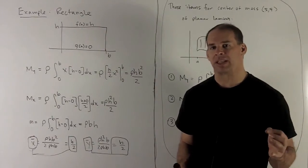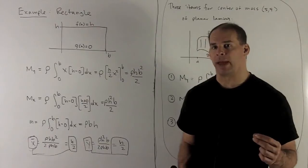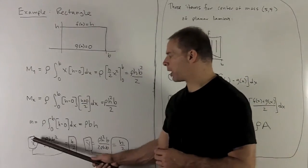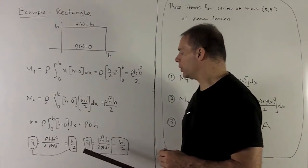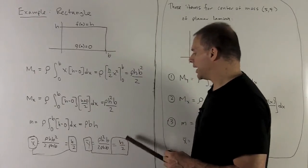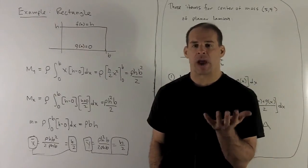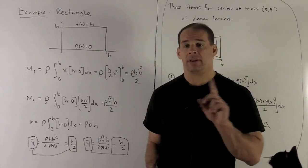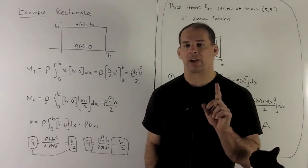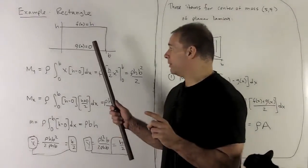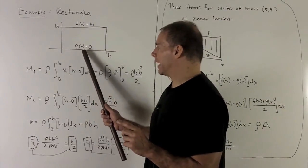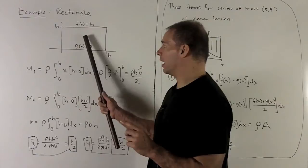If I want x-bar and y-bar, I just take the moment with the opposite letter, divide by the total mass. So for x-bar, we're going to get b over 2. For y-bar, I'm going to get h over 2. And note, that's what we would expect. If I had a rectangle made of the same substance throughout, uniform density, then its center of mass is going to be dead center. It's going to be half the base, half the height.